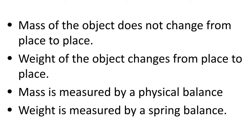Coming to the main difference between mass and weight: mass of an object does not change from place to place, whereas weight of an object changes from place to place. Mass is measured by a physical balance, weight is measured by a spring balance.